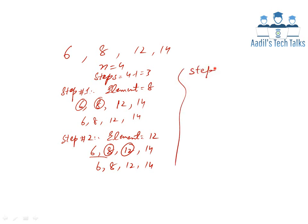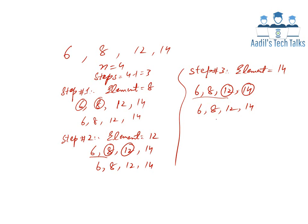Step 3: element is 14. Fourteen is compared with the front element of the sorted list, 12, and 14 is found larger than the largest element of the sorted list. So 14 is inserted at the front of the sorted list: 6, 8, 12, 14. This demonstrates the intelligence of insertion sort on an already sorted list. In the second video, we will study the algorithm and execution of the algorithm of insertion sort. Please like and share this video with your friends and subscribe to my channel. Thank you.